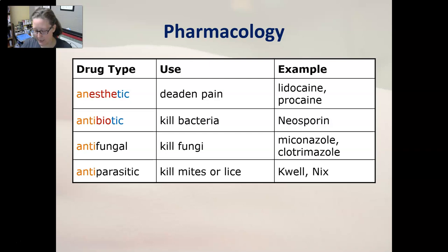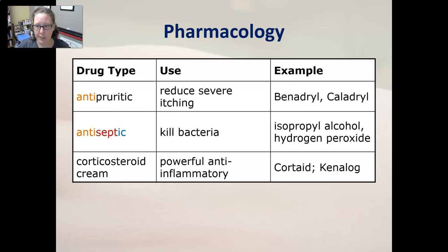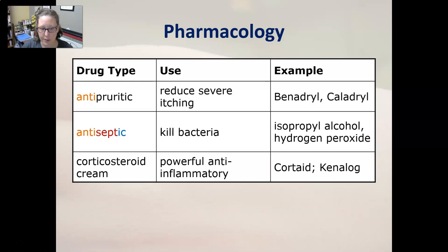An antipruritic reduces severe itching, like Caladryl, Benadryl, or hydrocortisone topical cream. An antiseptic kills bacteria — examples are isopropyl alcohol or hydrogen peroxide. A corticosteroid cream is a powerful anti-inflammatory, like Aristocort or Kenalog, and it is more powerful than the antipruritic anti-itching cream. That wraps up our treatments and procedures for the integumentary system — thank you for tuning in.